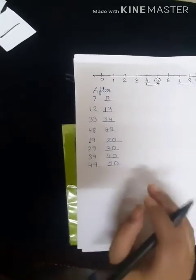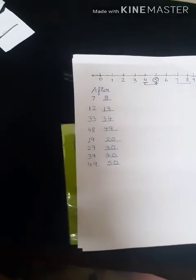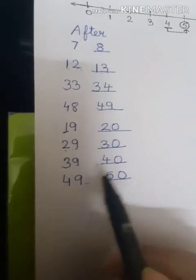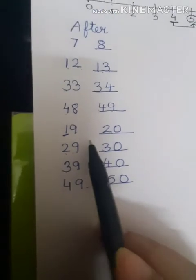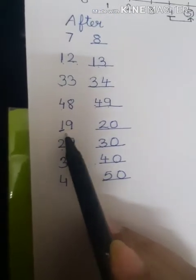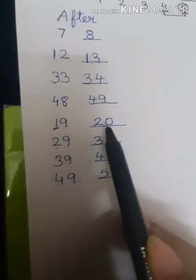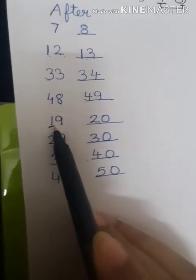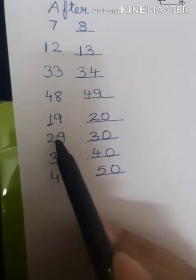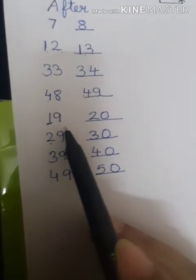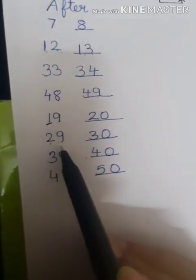So this is how we do what comes after a number. Children, remember one thing. Whenever a number ends with 9, then both the numbers will change. 9 will change to 0 and the other number will move to the next number. So if any number ends with 9, both the numbers are going to change.